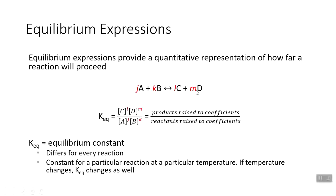In the general reaction, J, K, L, M represent coefficients; A and B represent reactants; C and D represent products. Equilibrium expressions are represented by K-eq — the equilibrium constant — written in this format: the numerator has products raised to their coefficients, where brackets mean molarity, and the denominator has reactants raised to their coefficients. The equilibrium constant is different for every reaction and is constant for a particular reaction at a particular temperature, but changes if you change the temperature.